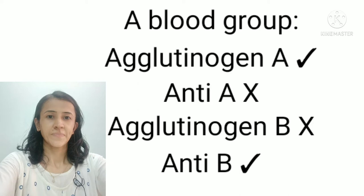So this is Landsteiner's law. Whenever you are talking about the law, you must start with the agglutinogen. When a particular agglutinogen is present on the RBC membrane, the corresponding agglutinin must be absent in the serum. Second part: when agglutinogen is absent on the RBC membrane, the corresponding agglutinin must be present in the plasma or serum.